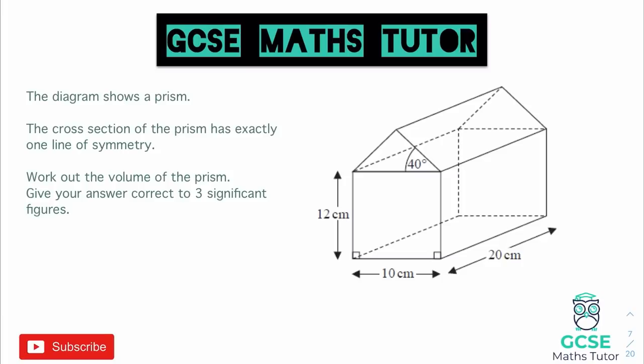So we know that the line of symmetry goes straight down the middle, which is helpful as it tells us that the angle of 40 degrees will be the same on the other side, and therefore it's an isosceles triangle. It says work out the volume of the prism, give your answer correct to three significant figures. We are going to be using a calculator for this question. To find the volume of any prism, you have to find the area of the cross section and multiply it by the depth or the length that it goes through the shape.